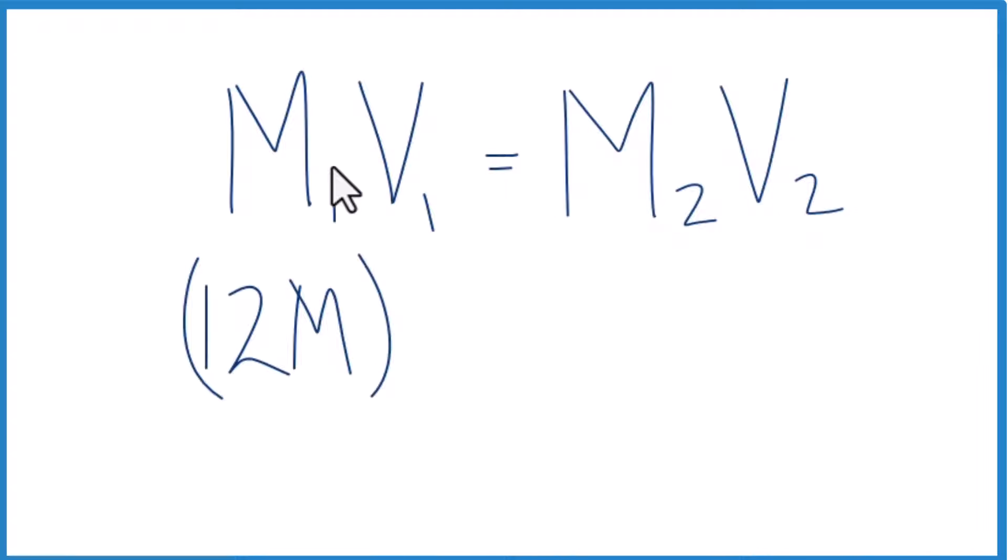And we don't know how much we're going to take, we'll just call this V1. But we said we wanted to have a 0.1 molar solution, and we're going to make one liter of that.